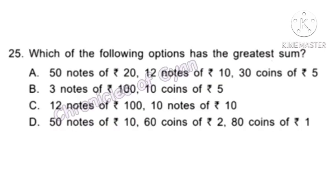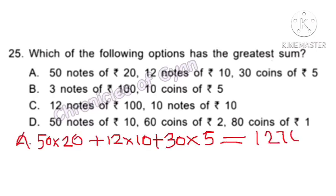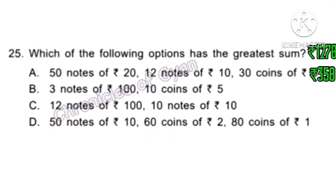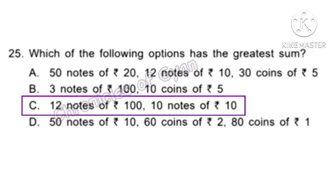Question 25. Which of the following options has the greatest sum? Option A is Rs. 1,270, option B is Rs. 350, option C is Rs. 1,300, and option D is Rs. 700. Out of all four options, Rs. 1,300 — option C — is the greatest sum. Hence option C is the answer.